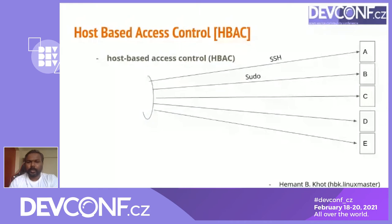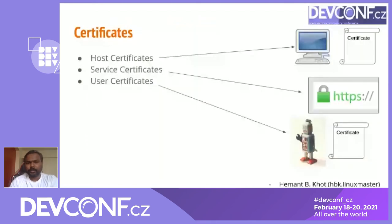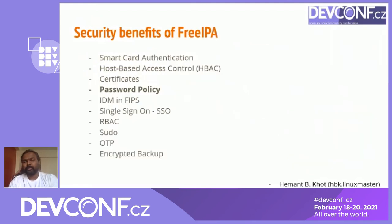Dogtag acts as a core component of FreeIPA for issuing certificates. There are three types of certificates: host certificates — issued to a host and used to configure different services; service certificates — specific to a particular service, for example an HTTPS/Apache certificate; and user certificates — issued to a specific user to authenticate that user with a certificate.